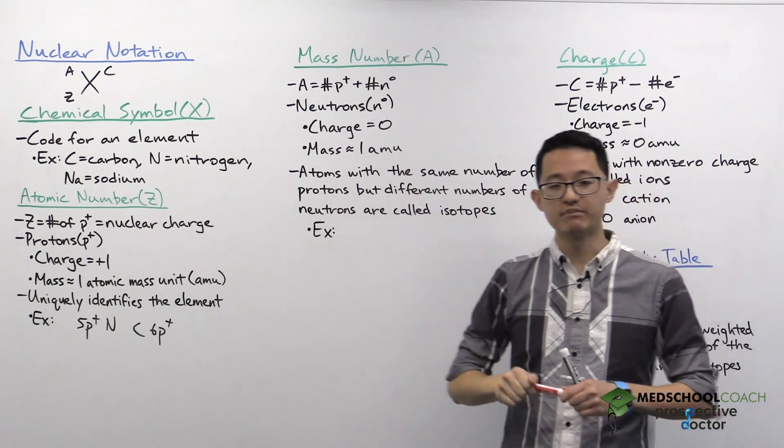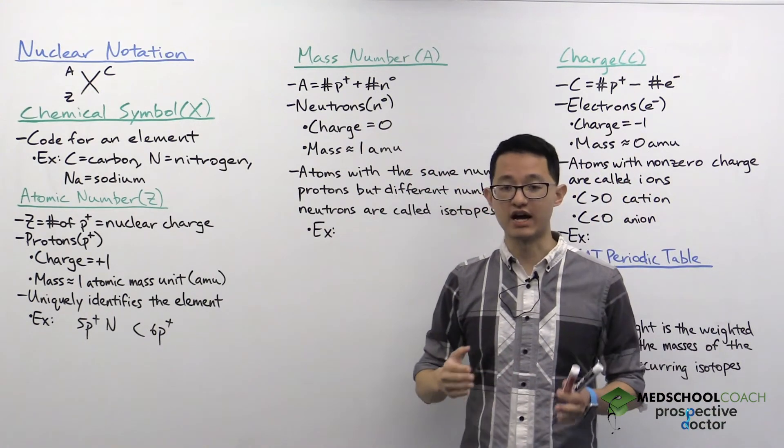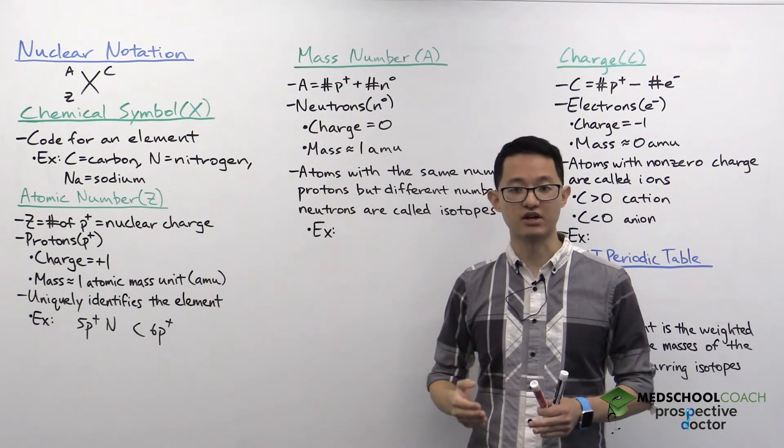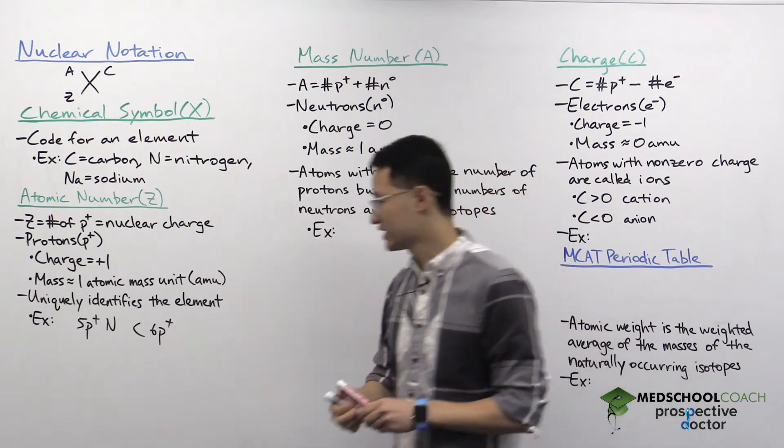Again, what's important for the MCAT is knowing about atoms called isotopes. Isotopes are atoms with the same number of protons but different numbers of neutrons.